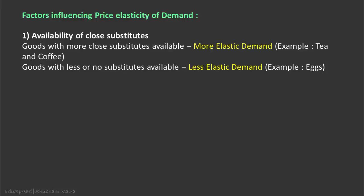For example, tea and coffee can be easily substituted for each other. So even a small increase in the price of tea, assuming the price of coffee is constant, will cause the quantity of tea sold to fall by a large amount. On the other hand, the demand for eggs is likely to be less elastic as compared to demand for tea, as there is no close substitute available for eggs in the market.